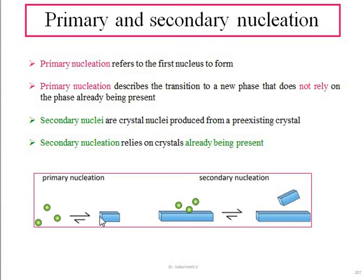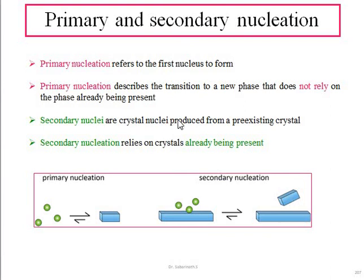In secondary nucleation, a primary nucleus is already present. The liquid molecules come and sit on the primary nucleus and join together, producing secondary nuclei — crystals nuclei produced from a pre-existing crystal. Such a process is known as secondary nucleation, which relies on a crystal that is already present inside the phase.